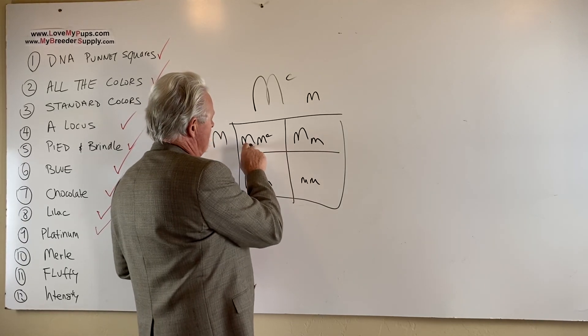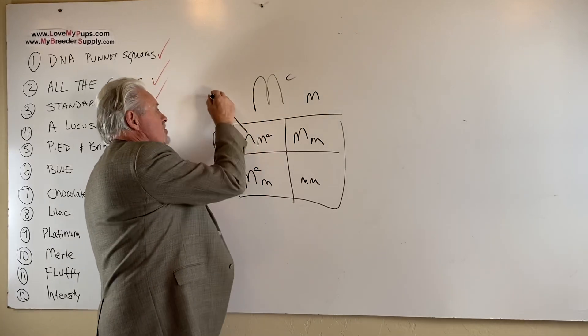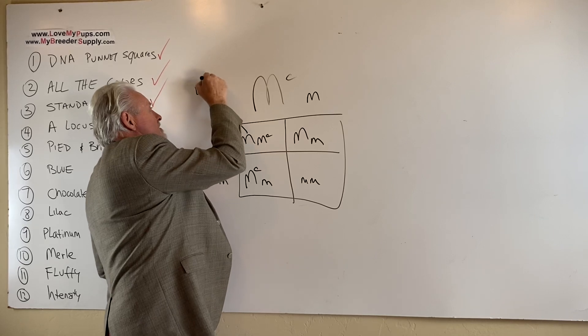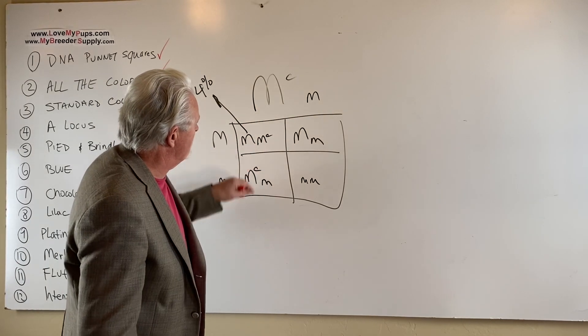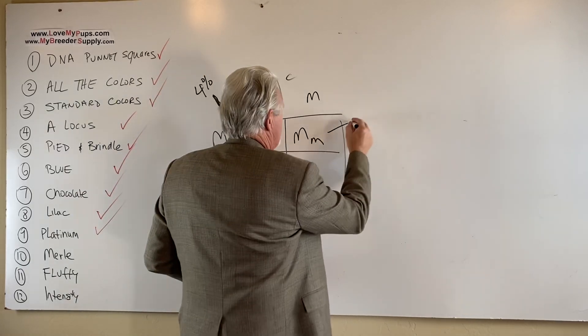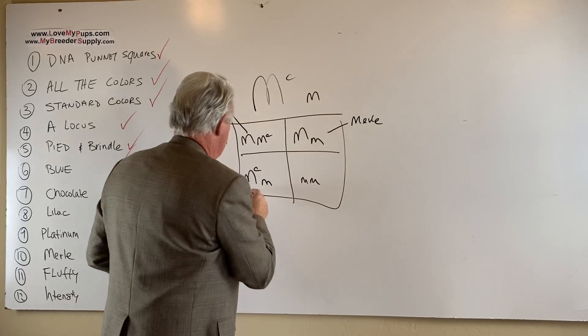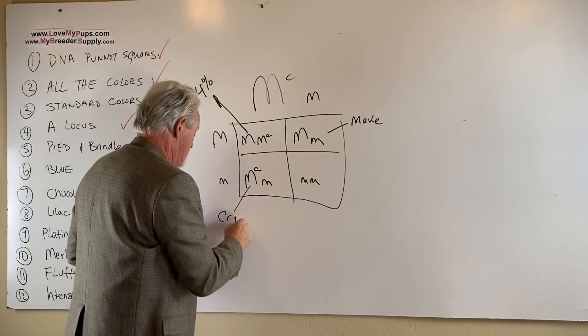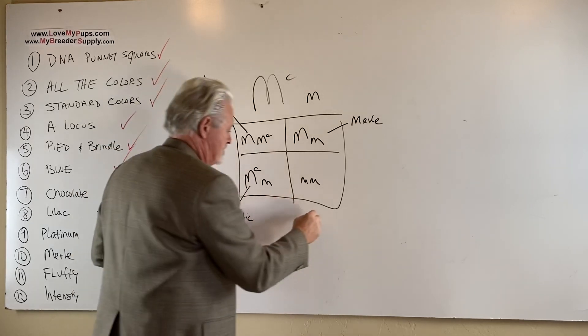And this guy here is a double Merle with cryptic. Supposedly, this is not an issue. Only four percent of these dogs run into trouble. So you've got a relatively good chance you don't have a problem. This is a Merle. There's a Merle. And this is a cryptic Merle. So I don't think this shows up. This will be a cryptic Merle. So I don't think this one shows any Merle at all. This is a non-Merle here.